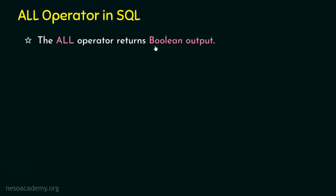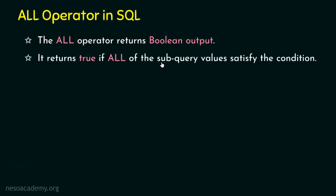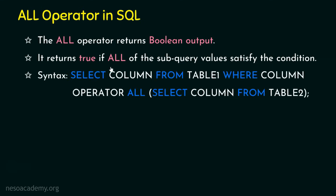Now let's move on to the ALL operator in SQL. Unlike ANY where at least one value needs to satisfy the condition, ALL requires that all subquery values satisfy the condition. The ALL operator also returns a boolean, returning true only if all subquery values satisfy the condition. The syntax is: SELECT column FROM table1 WHERE column operator ALL (SELECT column FROM table2), using the same set of operators.